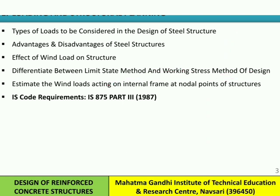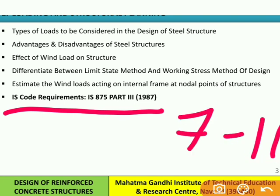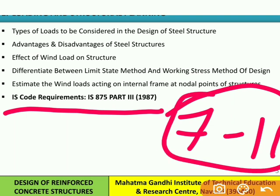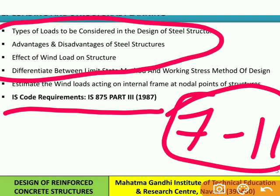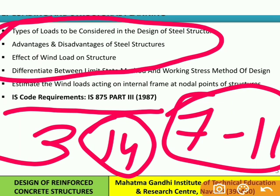We will also estimate the wind load acting on the internal frame at nodal points of the structure — that is, we need to design different kinds of loads, the nodal loads acting at different floor levels of the building. For that, we will use code IS 875 Part 3, 1987. In the exam, one sum will definitely be there from this chapter in the range of 7 to 11 marks, and theory will be there for 3 marks, so basically it is a 14-mark chapter.